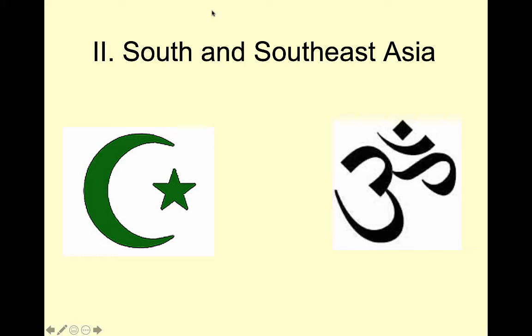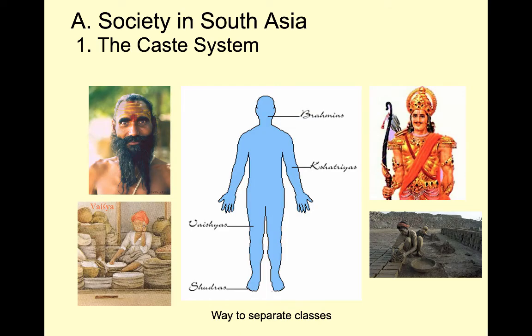This will be a multi-part lecture. Part one is going to deal with some of the major faiths that develop in this part of the world, and then major faiths that come in. We've talked about Islam already — this is the crescent moon symbol. On the right is a symbol for Hinduism with the Om symbol. We're going to talk about Hinduism, Buddhism, and at the very end of part one, the introduction of Islam into South Asia.